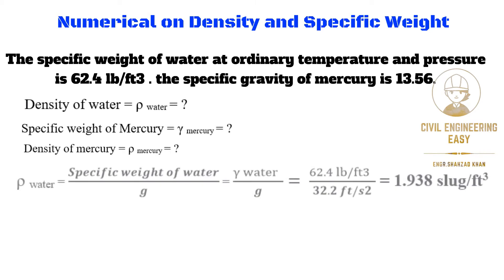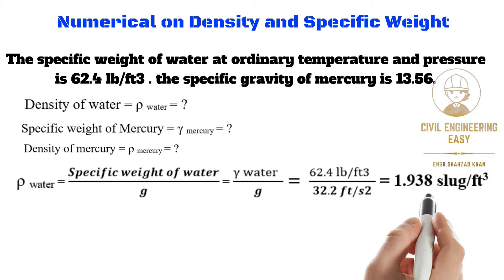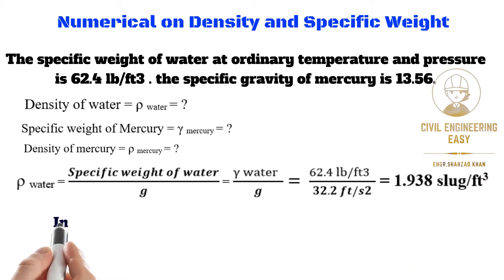The density of water is equal to the specific weight of water divided by the gravitational acceleration. The specific weight of water is 62.4 pounds per cubic feet, divided by the value of g in the FPS system, which is 32.2 feet per second squared. The density of water will become 1.938 slugs per cubic feet.